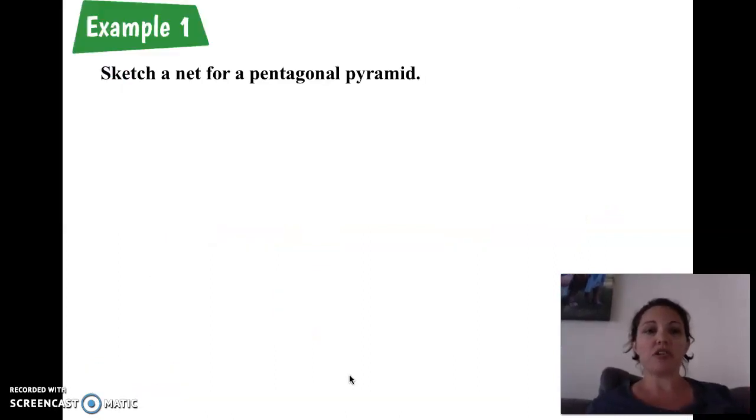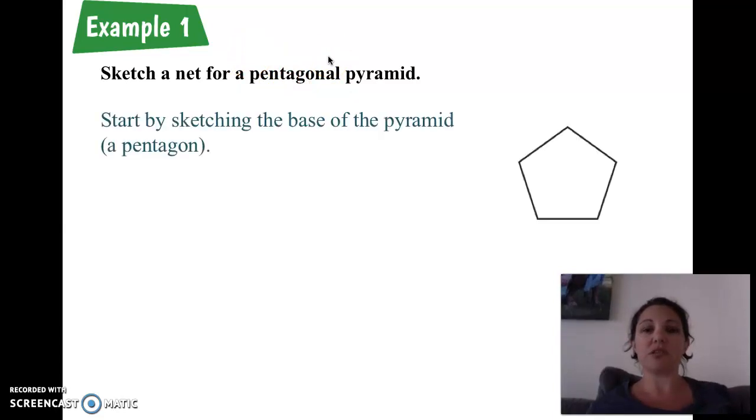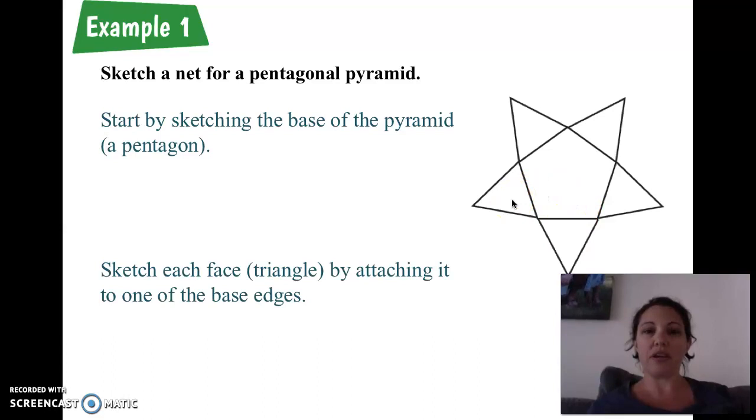So we're going to start with a net for a pentagonal pyramid. Pentagonal, the word pentagon, five sides. So we're going to start with the base. The five-sided figure is a pentagon. Since it's a pyramid that means it's going to have a lot of triangles. So from every one of these sides we're going to draw a triangle. This is what a pentagonal pyramid would look like if you laid it out flat.